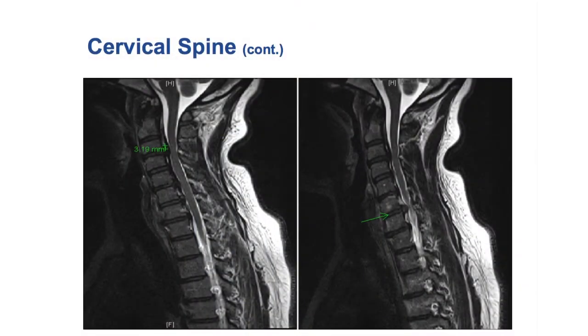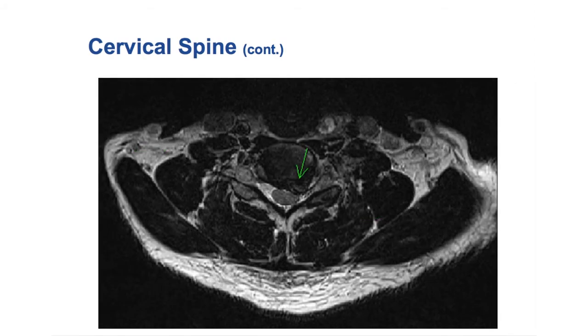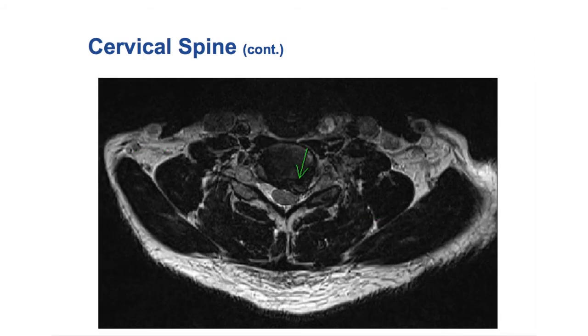On the film to the right, the disc was actually bulging and displacing the spinal cord. Looking at the axial view, you can see the actual displacement of the spinal cord. The MRI report impression indicated multi-level disc disease with significant central canal stenosis, most severe at C4-5-6 and C7.